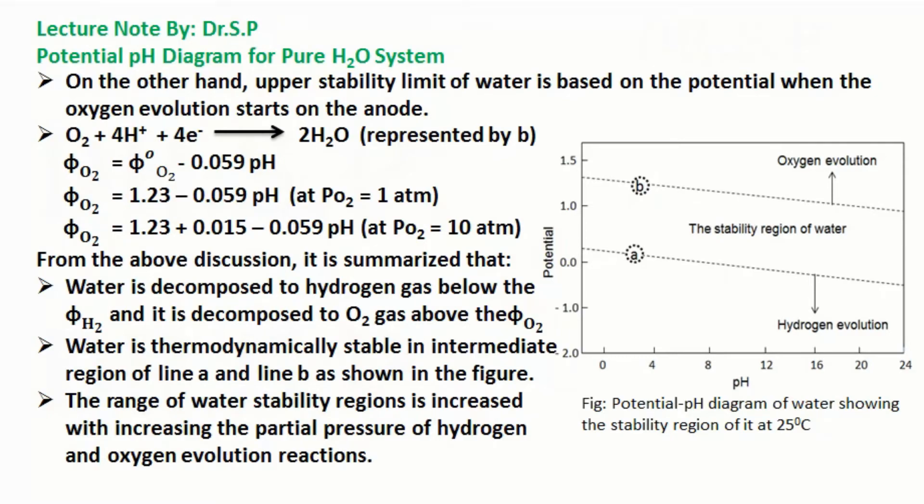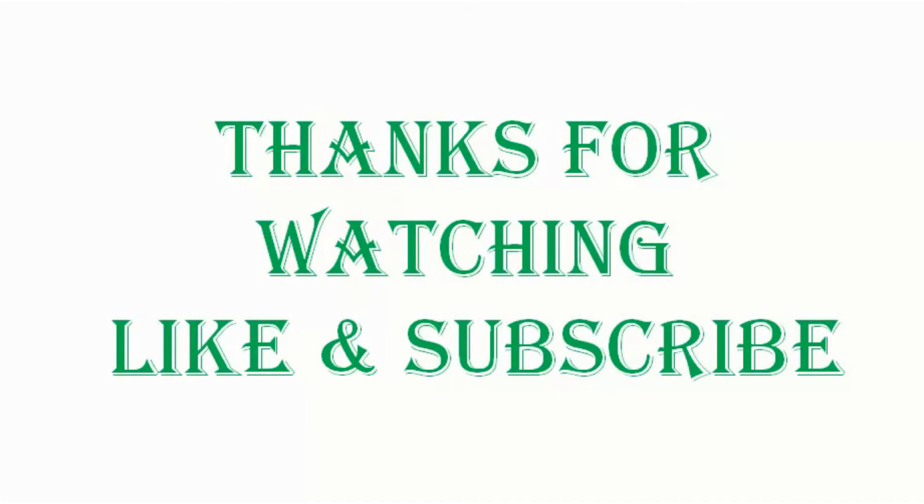Water is thermodynamically stable in intermediate region between line A and line B as shown in the figure. The zone between the hydrogen production and oxygen production is the region of water stability. The range of water stability regions is increased with increasing the partial pressure of hydrogen and oxygen evolution reactions.